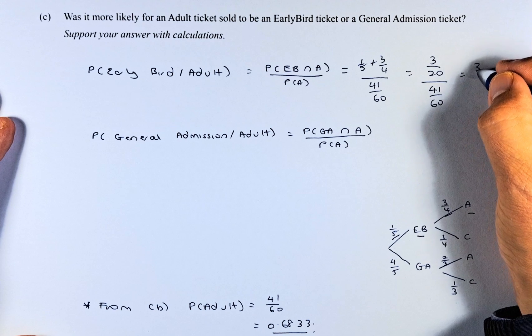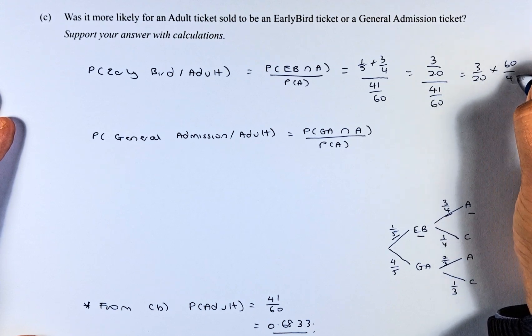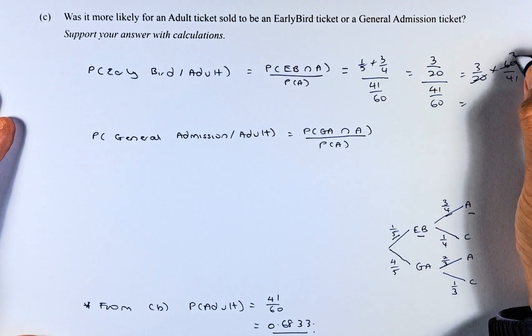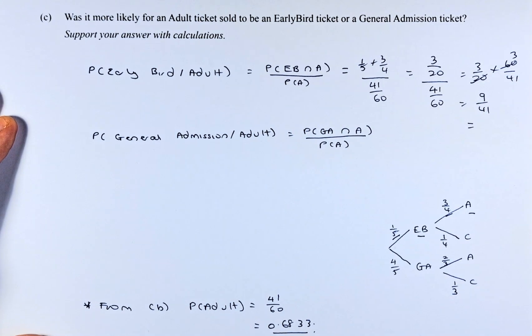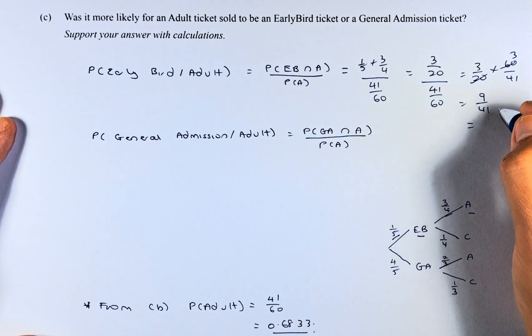To simplify, we multiply 3 over 20 times 60 over 41. The 20 and 60 cancel to give 3, so we get 9 over 41, which equals 0.2195.